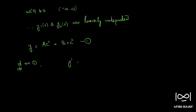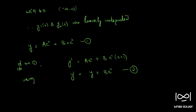We get y' = ae^x + b(xe^x + e^x). We can simplify this: y' = ae^x + bxe^x + be^x = y + be^x. So from equation 1, this gives us y' = y + be^x. Let this be equation 2.